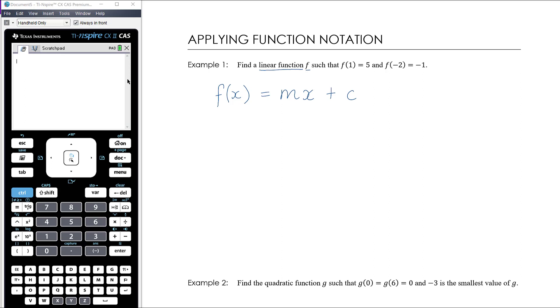We've been given two pieces of information and a linear function has two unknown coefficients m and c. So we know that f(1), which will be m times 1 plus c, is going to equal 5. So we know that m plus c equals 5. There's an equation involving m and c.